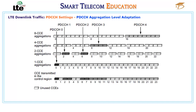A CCE is the smallest resource unit for transmission on a PDCCH. Each CCE contains 9 REGs and carries 72-bit information. Each REG contains 4 resource elements. Based on code rates, the eNodeB can aggregate 1, 2, 4, or 8 CCEs to constitute a PDCCH, corresponding to aggregation level 1, 2, 4, or 8. PDCCHs with aggregation level 8 have the lowest code rate and the best demodulation performance.